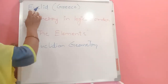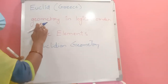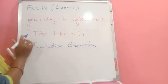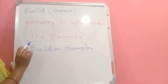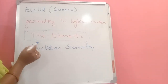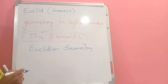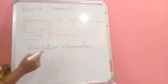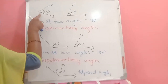The Greek scientist Euclid gave geometry in logical order. His book is called 'The Elements,' written by Euclid on geometry in logical order — this is a very important fact. His geometry is called Euclidean geometry.